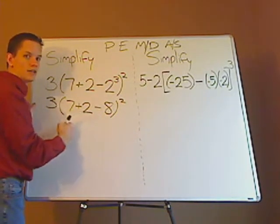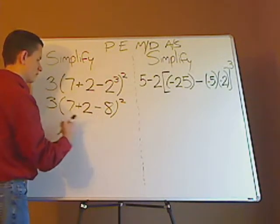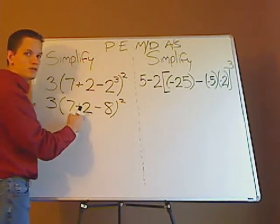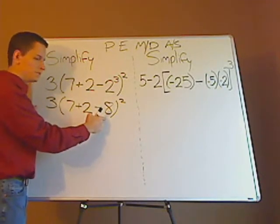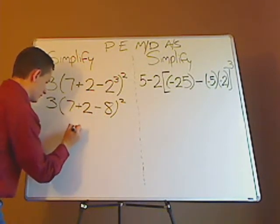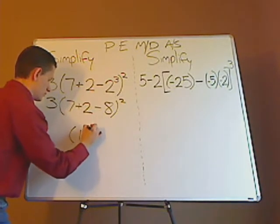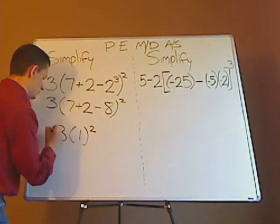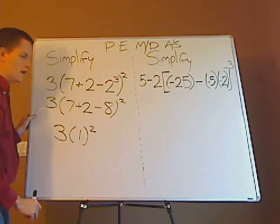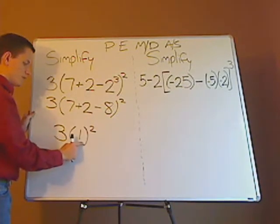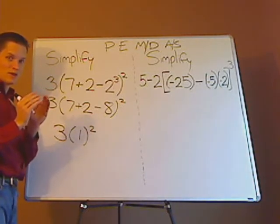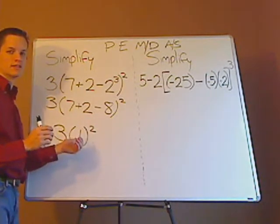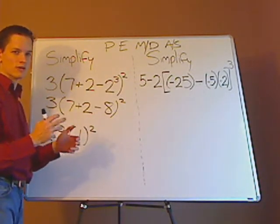Then you do addition subtraction from left to right, so that's 7 plus 2 which is 9, and then 9 minus 8 is 1. All right so the result ends up being 1. Now since it's just a number you're all set with the parentheses.